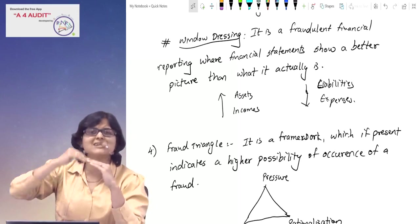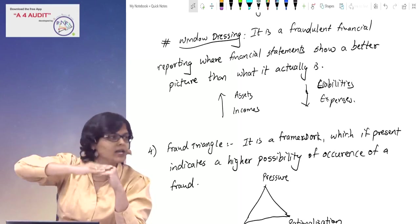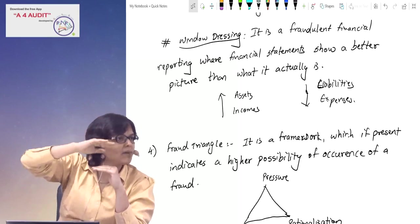In simple words, what happens? Assets inflated, income inflated, expenses come down, and liabilities come down.